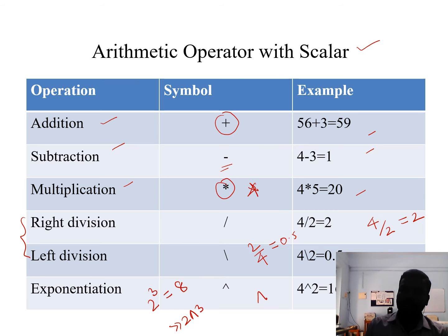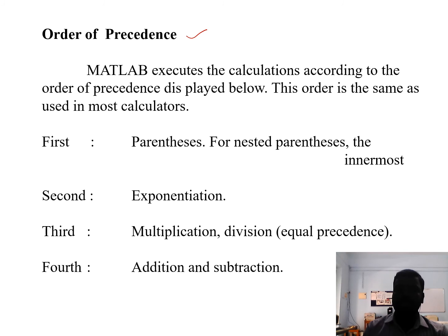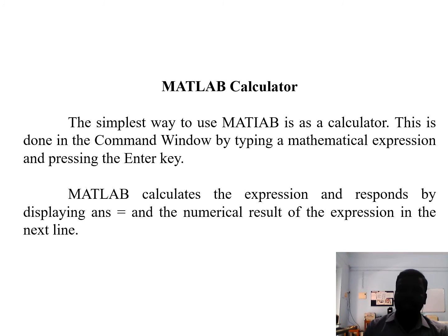MATLAB executes calculations according to an order of precedence, similar to the BODMAS rule in mathematics. The first priority is parentheses (innermost brackets first), second is the exponential symbol (^), third is multiplication (*), right division (/), and left division (\), and fourth is addition (+) and subtraction (-).